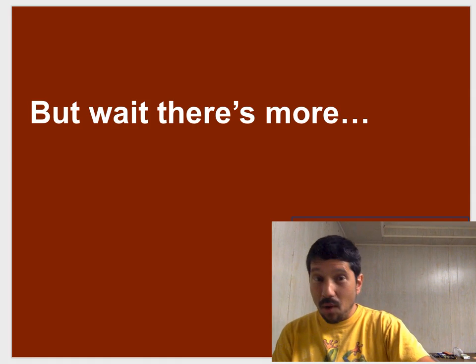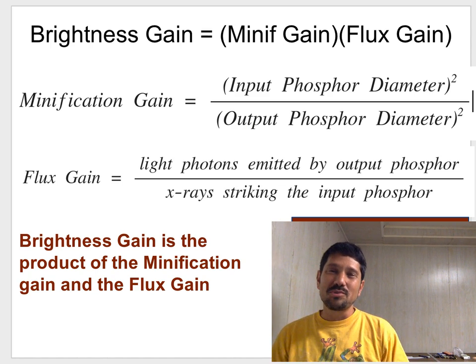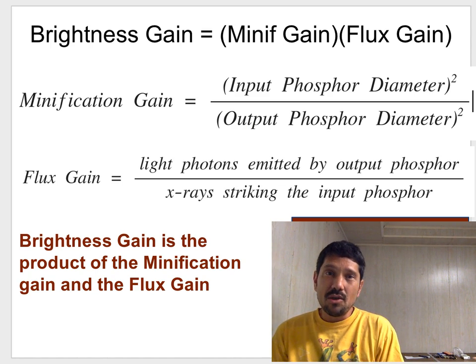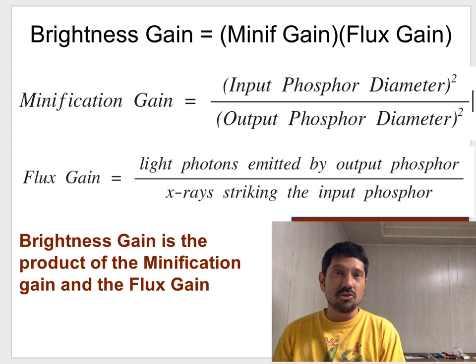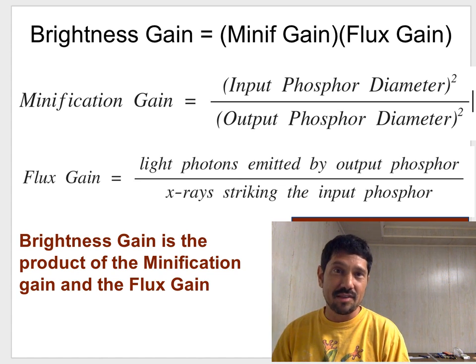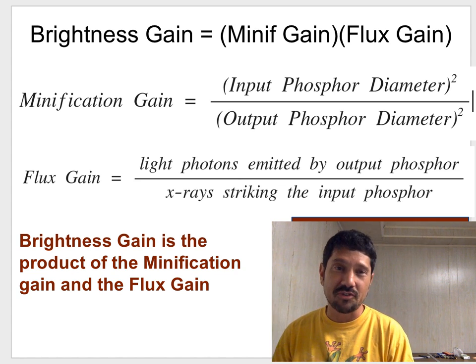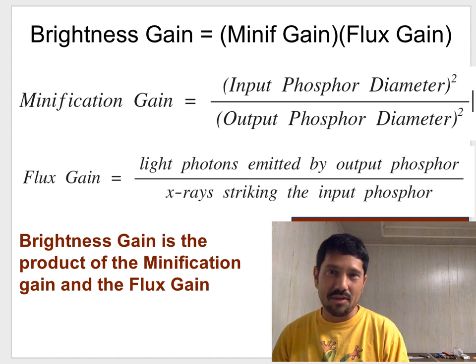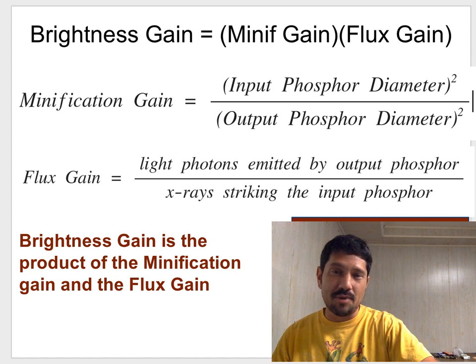But wait! But wait! There's more! Okay. So, what we do is we have an overall brightness gain, which is the product of the minification gain times the flux gain. What did I gain due to minifying my image and having those geometries? What do I get by picking these cool phosphors and this great photocathode so I can crank up my signal? So the brightness gain is the product of the two.